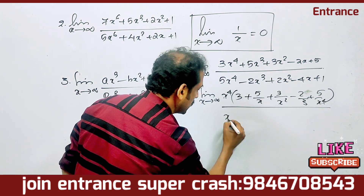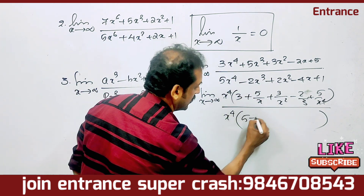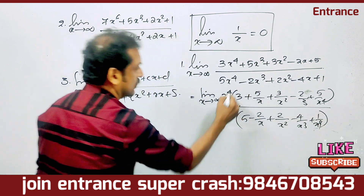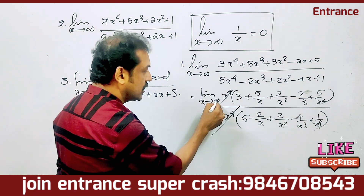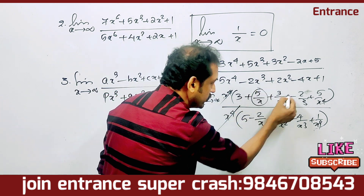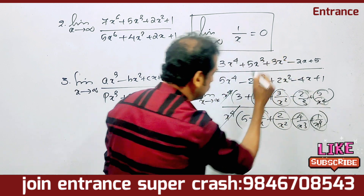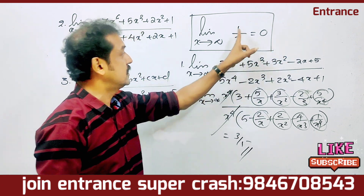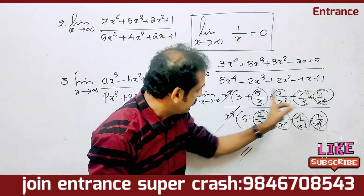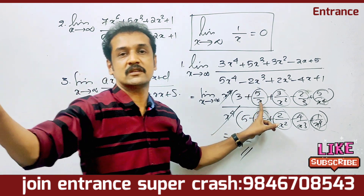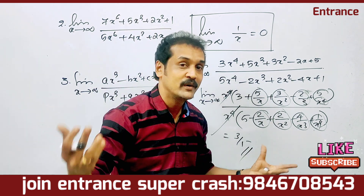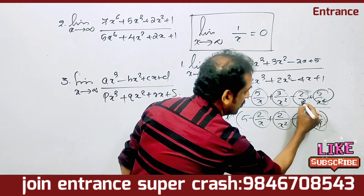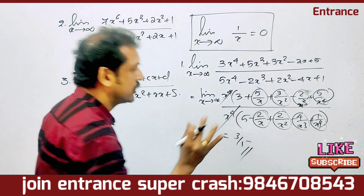In the denominator we get x raise to 4 as common, giving bracket 5 - 2/x - 2/x² - 4/x³ + 1/x⁴. The x raise to 4 terms cancel. Then limit x tends to infinity: all terms like 5/x, 3/x², 1/x are zero. The answer is 3 by 5.